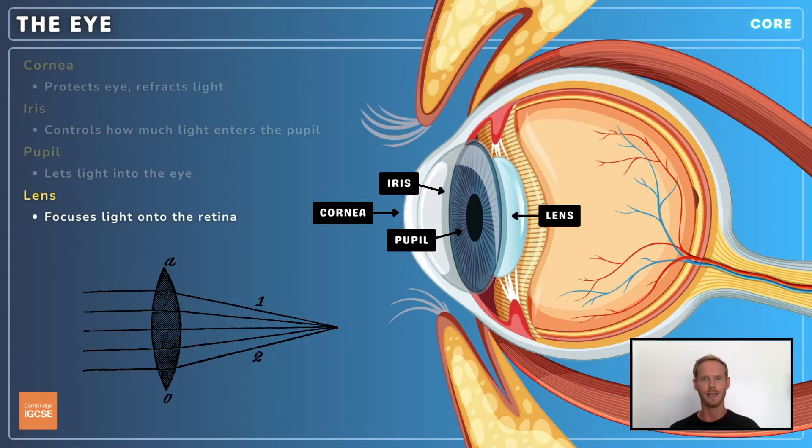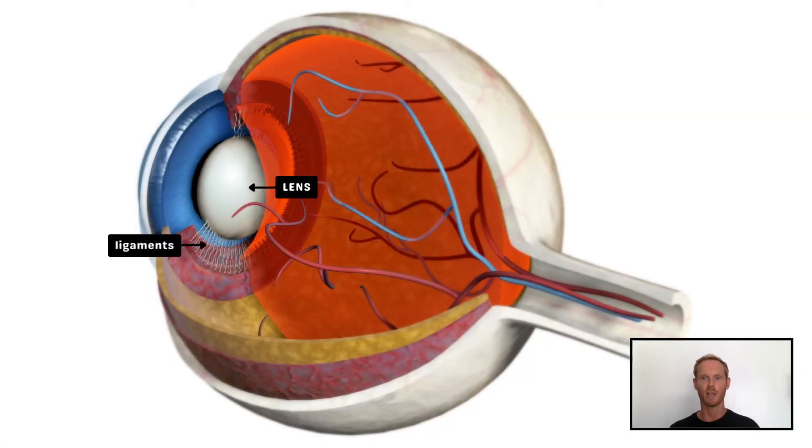Behind the iris is the lens, a clear, flexible structure that refracts light to focus it onto the retina. It's held in place by ligaments and is capable of changing shape when focusing on near and distant objects. We'll return to this later on.